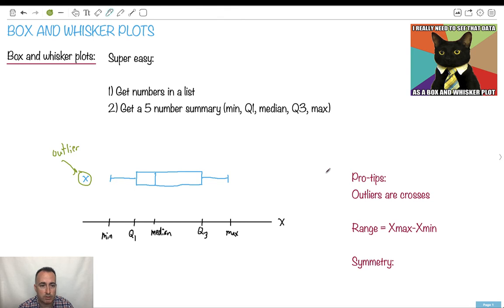So these are your pro tips. Outliers are crosses. Remember what outliers are? Outliers are greater than 1.5 times IQR from Q1 or Q3. So I have another video showing you that. That's what those are, crosses.